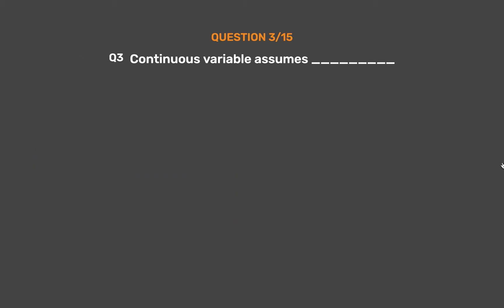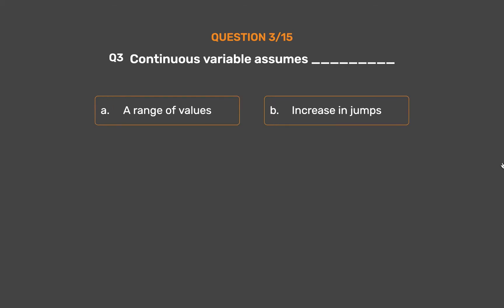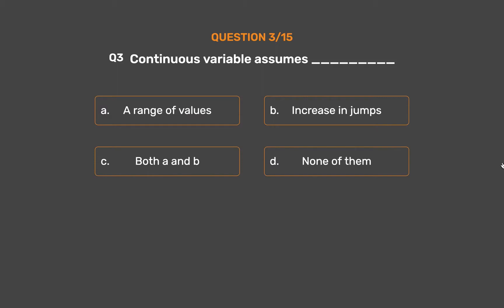Question number 3. Continuous variable assumes underscore. Option A: A range of values. Option B: Increase in jumps. Option C: Both A and B. Option D: None of them. The correct answer is Option A: A range of values.